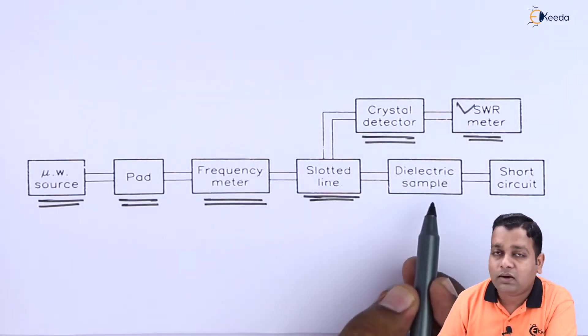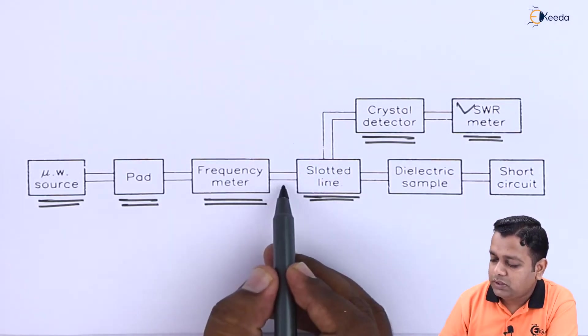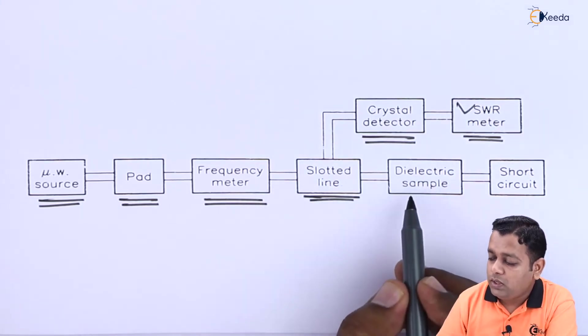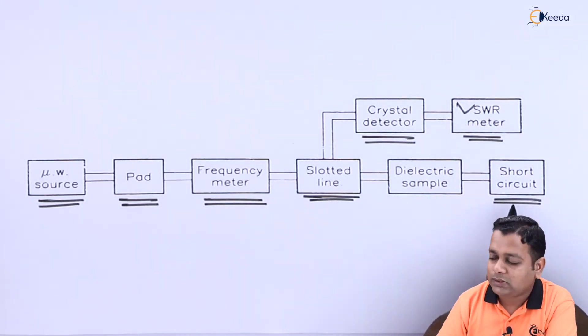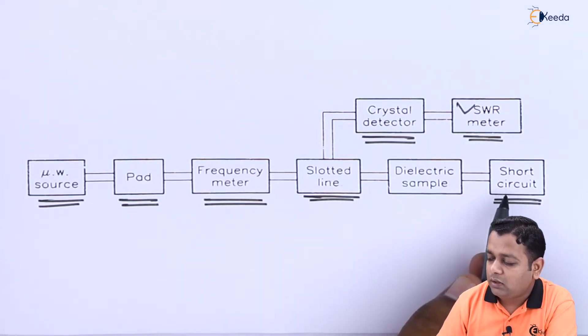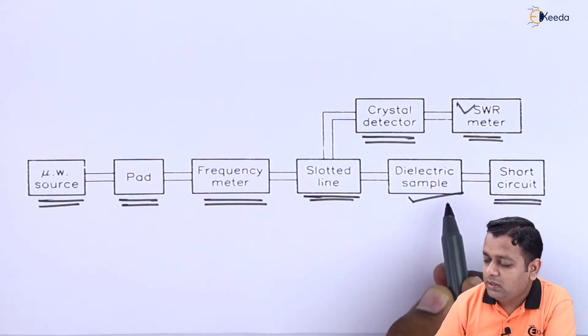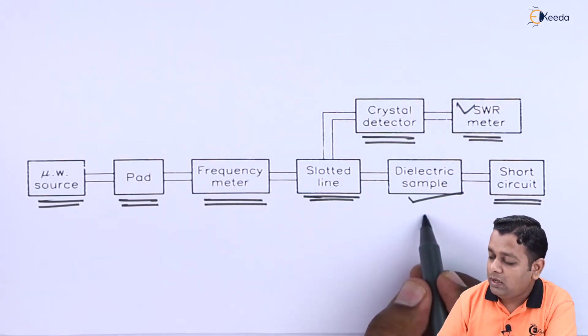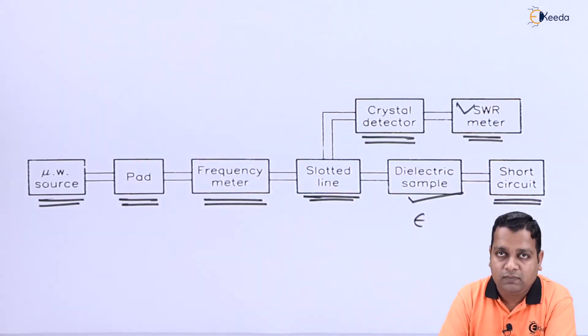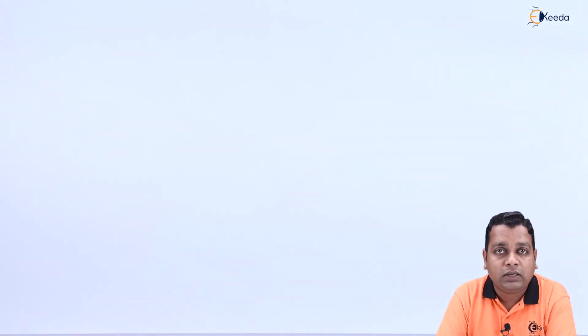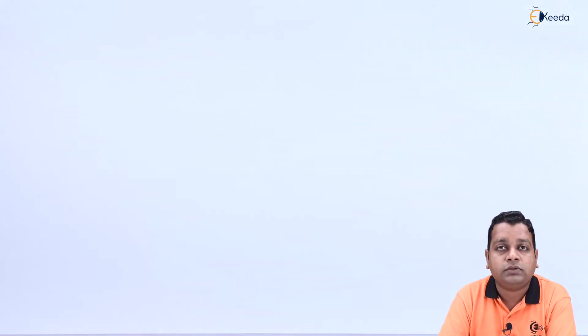At the second end of the slotted line, the microwave source is incident at the first end. We have short-circuiting at the far end, and between the slotted line and the short-circuit assembly, the dielectric sample material — for which the dielectric constant is to be determined — is placed. A modification can also be made by removing the dielectric material and directly connecting the slotted line to the short-circuited plates.